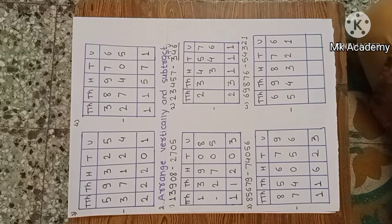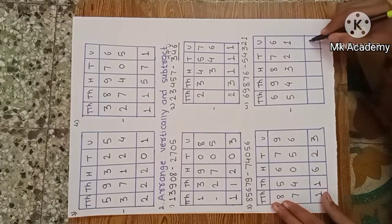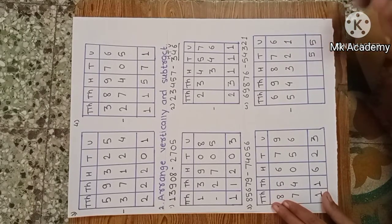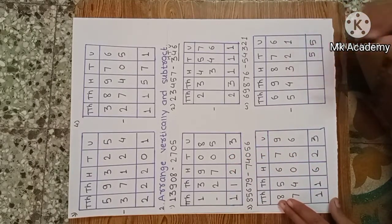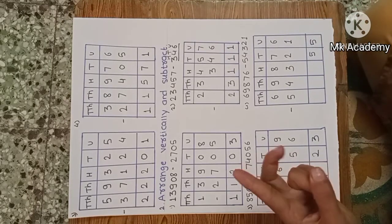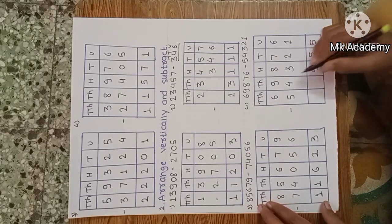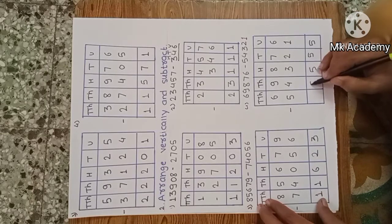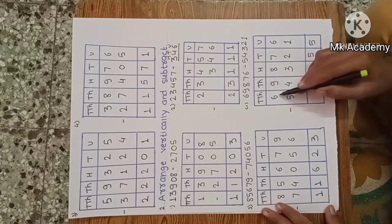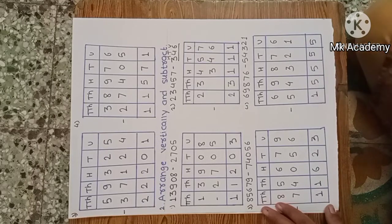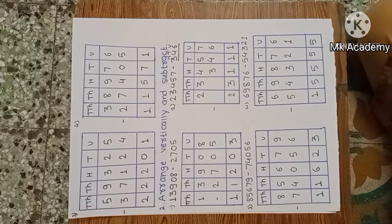Fourth example: sixty-nine thousand eight hundred seventy-six minus fifty-four thousand three hundred twenty-one. Start from unit place: 6 minus 1, five remaining. Tens: 7 minus 2, five remaining. Hundreds: 8 minus 3, five remaining. Thousands: 9 minus 4, five remaining. Ten thousands: 6 minus 5, one remaining. The answer is fifteen thousand five hundred and fifty-five.